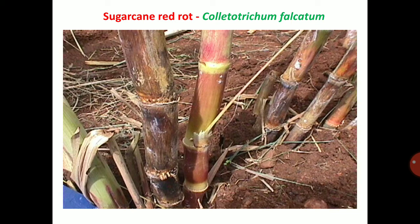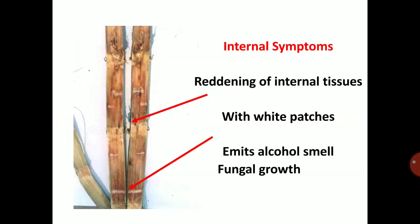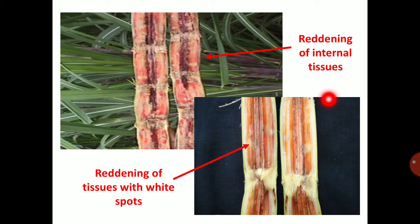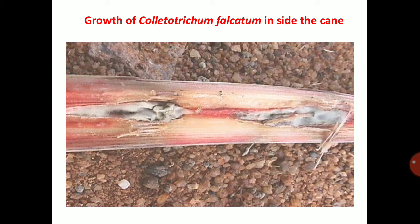Sugarcane red rot is caused by Colletotrichum falcatum. The external symptom shows red to black color lesions. The important typical symptom is seen on the internal portion of the cane — it mainly targets the cane of sugarcane. It will emit an alcohol smell and produce fungal growth. This is the reddening symptom with white spots. Growth of Colletotrichum falcatum inside the cane in severe stage will produce vascular mycelium on the infected portion.